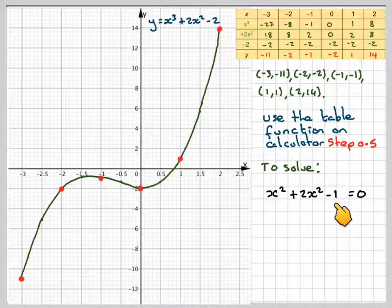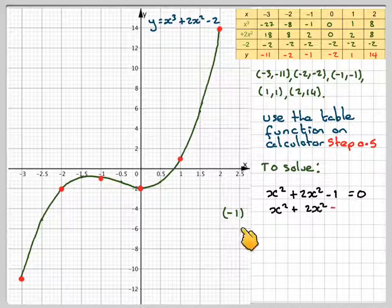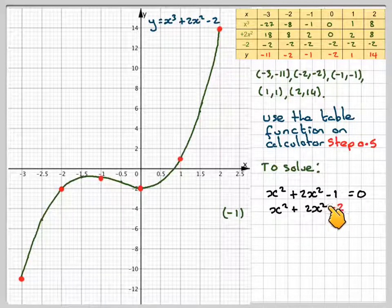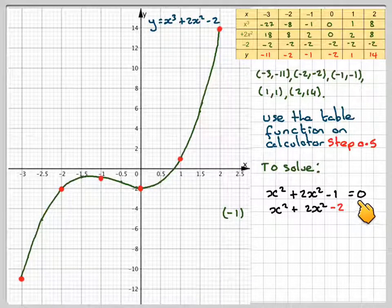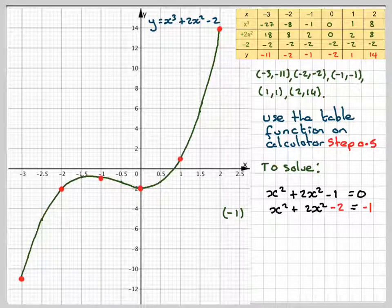But we've got the curve x cubed plus 2x squared minus 2. Well, in order to make that minus 2, I will need to take minus 1 from both sides. If I take minus 1 from this side, this will become minus 2. And then if I do 0 minus 1, I've got minus 1.